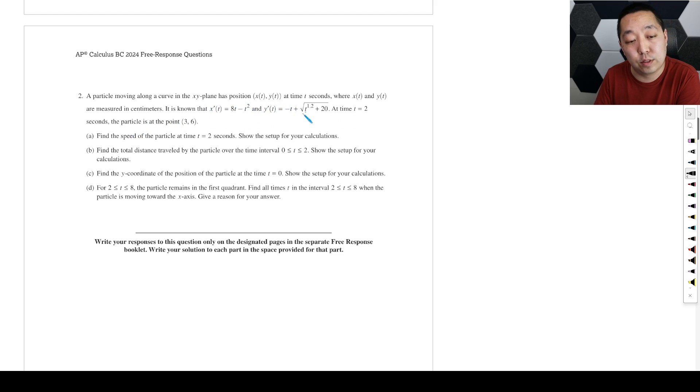So we have a particle moving along a curve with position x of t, y of t, so it's a parametric. It is known that x prime is that, and y prime is that at times equal to. So we know the velocity, or we're given the velocity vector here because we're given the derivative, and we're given this initial point.